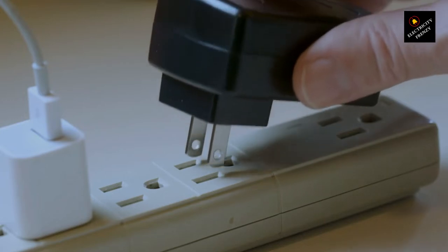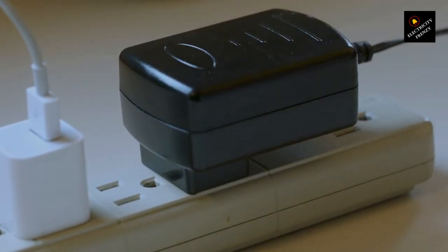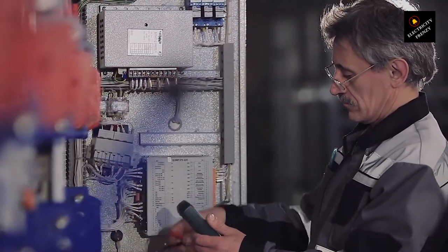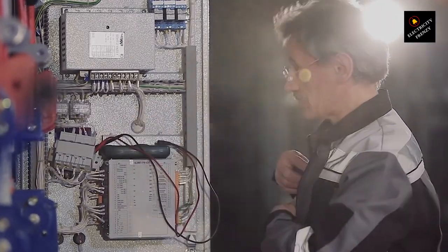Now, one common reason for a circuit breaker to trip is an overloaded circuit. That happens when the total electrical load exceeds the circuit's capacity. To check if this is the issue, unplug or turn off some devices on the circuit and see if the breaker still trips. This simple step can often solve the problem.